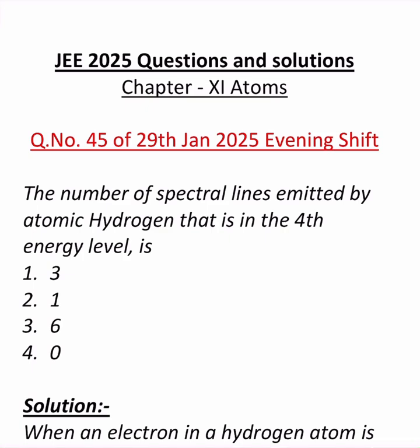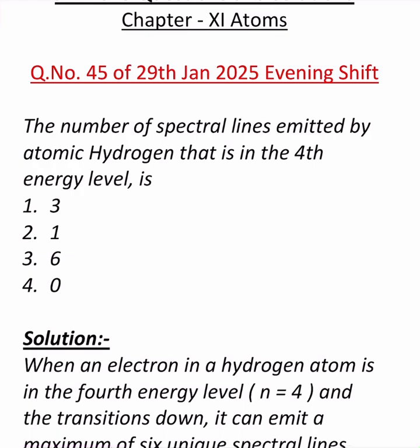The question goes like this: the number of spectral lines emitted by atomic hydrogen that is in the fourth energy level is, and they have given four options.